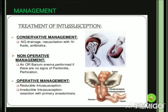Now we will move on to the management of intussusception in children. Treatment can be differentiated into conservative management, non-operative management, and operative management. Conservative management maintains the normal physical functioning of the child. Non-operative management uses air or barium enema as a therapeutic measure to reduce the intussusception. Operative management involves either a laparoscopic method or a laparotomy method to pull out the telescoped intestines.